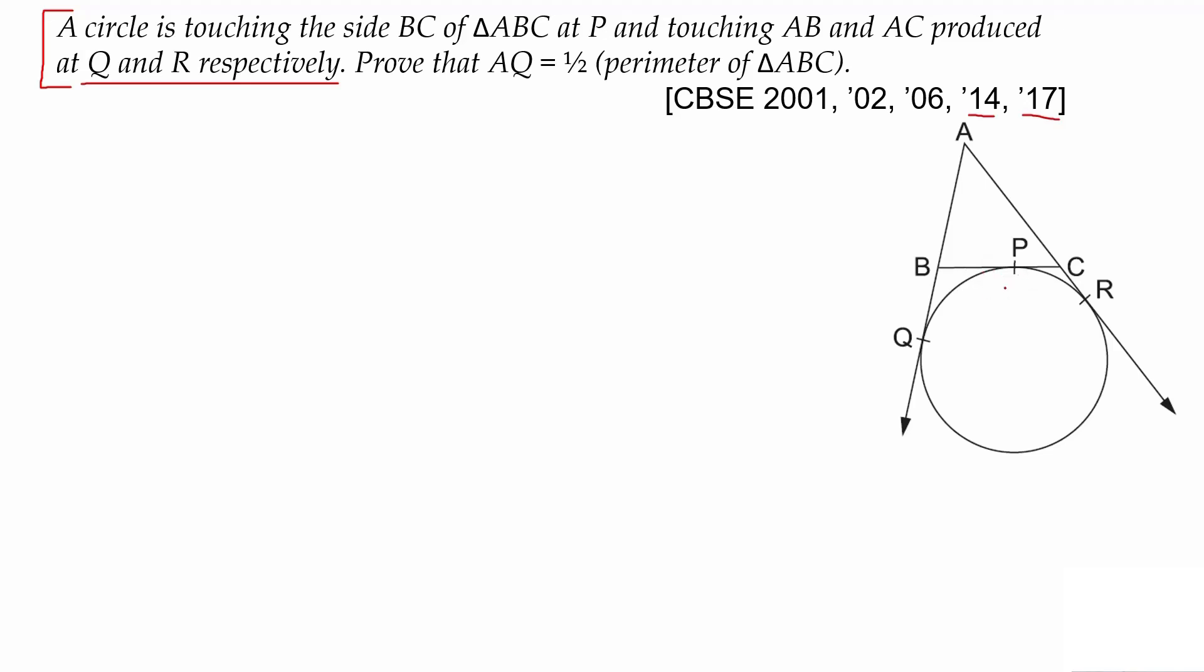The circle touches BC at point P. When we extend AB, it will touch the circle at point Q and R. Now what we have to prove is that AQ equals half the perimeter of triangle ABC.